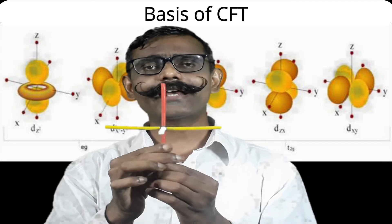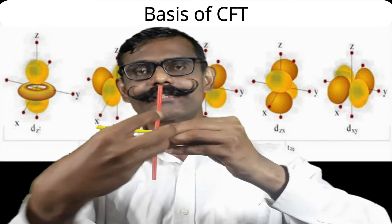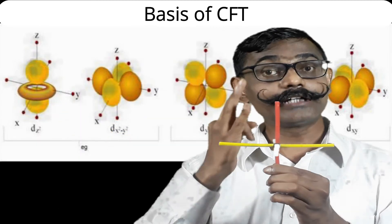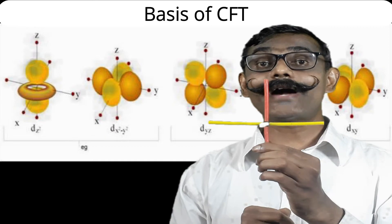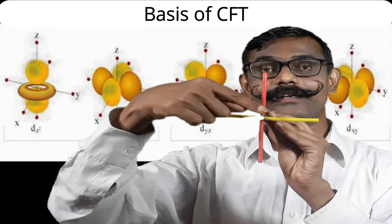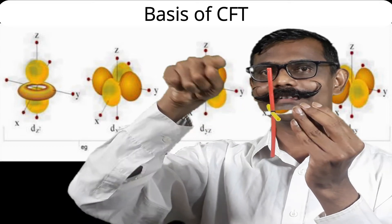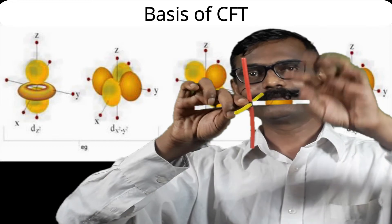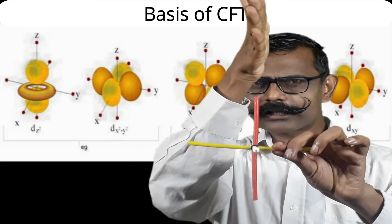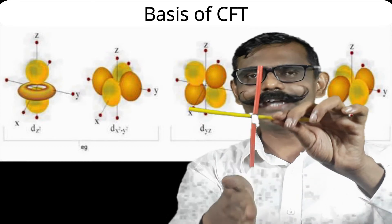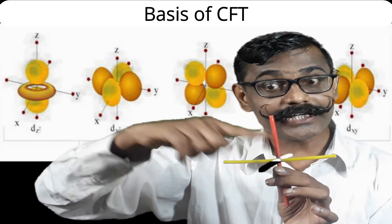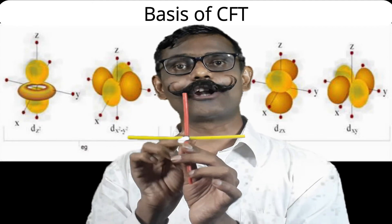The dx²-y² orbital is perfectly along the x and y axes — lobes along x and y, in the xy plane. The dyz orbital: y axis is towards you and z is up and down, so in between y and z the lobes will be there. The dyz orbital is not along y and z axes but in between them, lying in the yz plane.